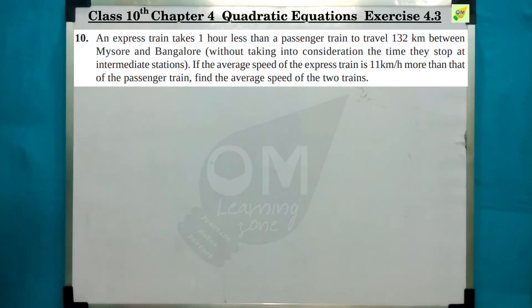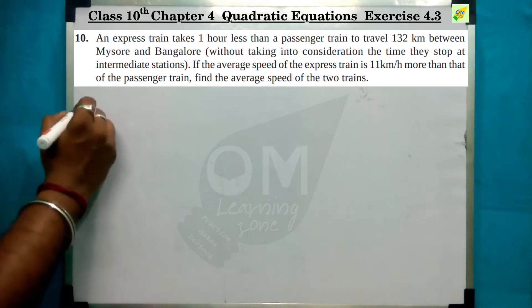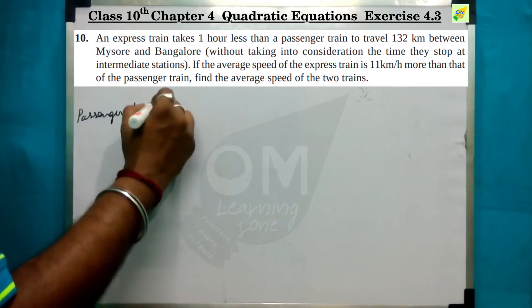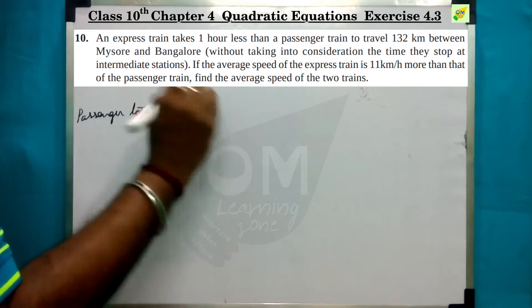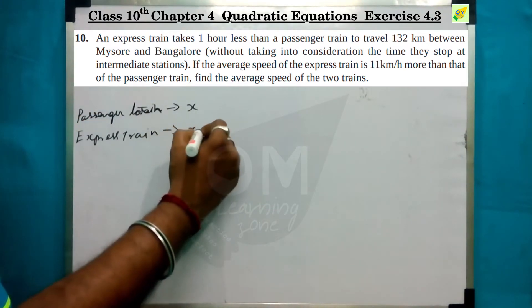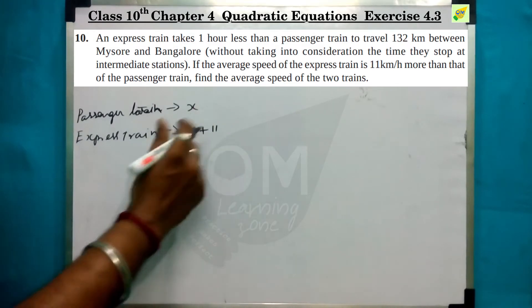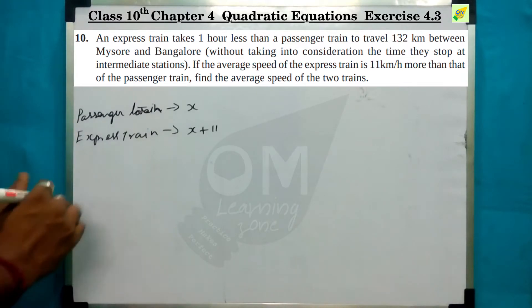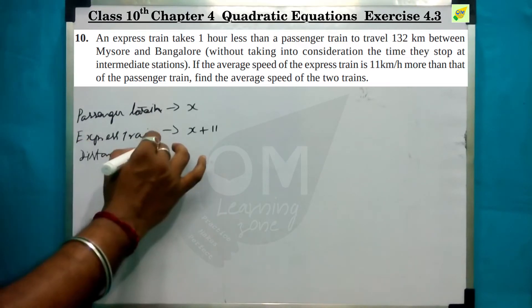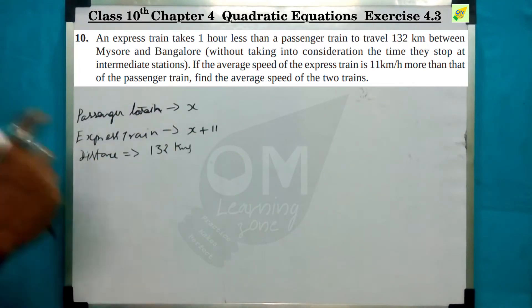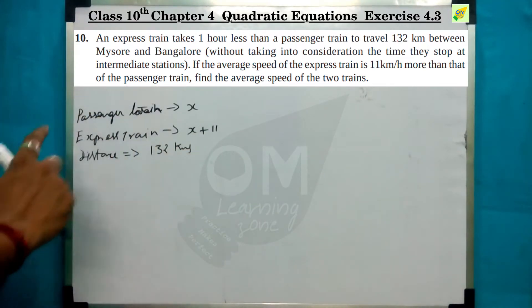The distance is 132 km. Now we have to find distance, time, and speed using the relationship between them.